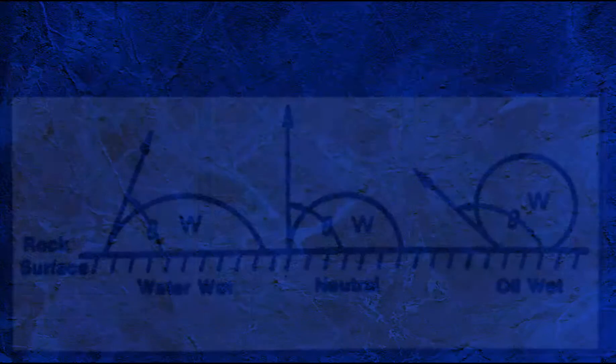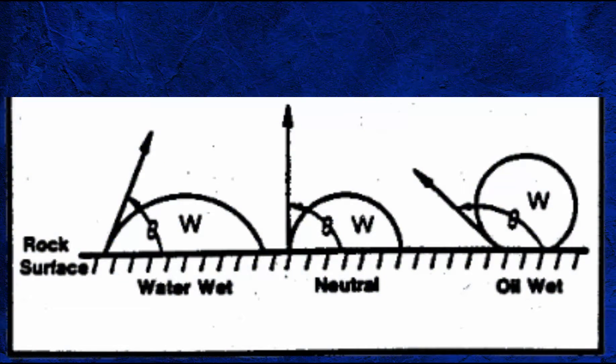When trying to define wettability, the contact angle of liquids is used. The arrows represent the tangent, the angle between the water droplet and the rock surface. The water droplet is surrounded by the oil phase, and on screen we have the three most common categories into which wettability is classified.